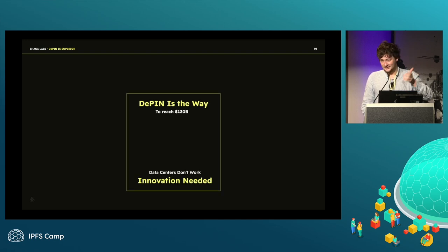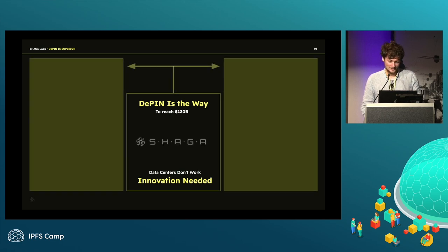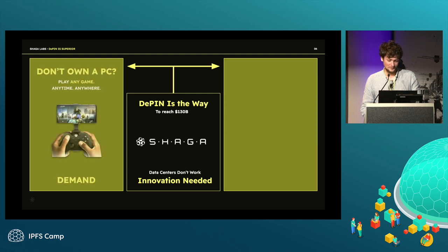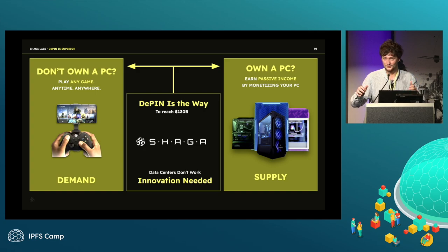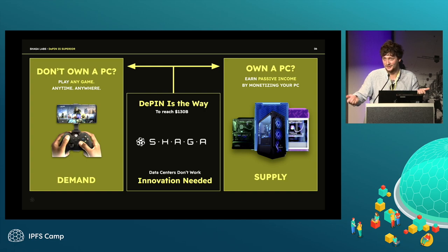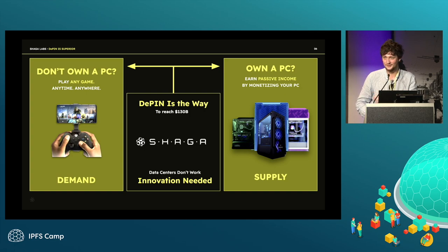DePIN is a term used recently — it stands for Decentralized Physical Infrastructure. We believe Shaga is the DePIN to solve latency through proximity. If you don't own a PC, you're on the demand side and can play any game anytime anywhere. If you own a PC, you can make passive income and possibly recover the investment over time.